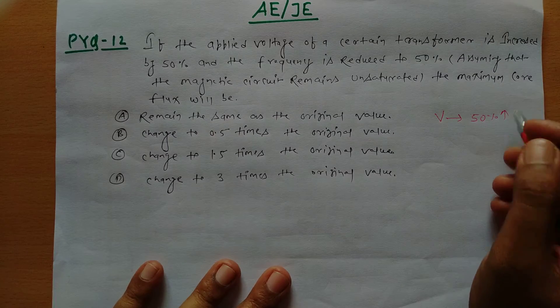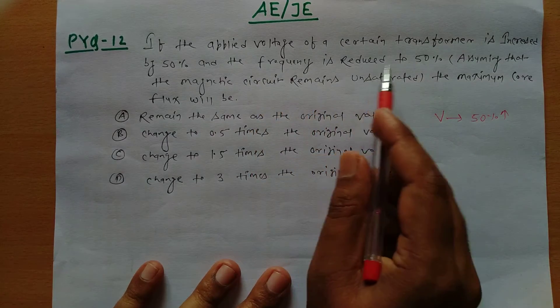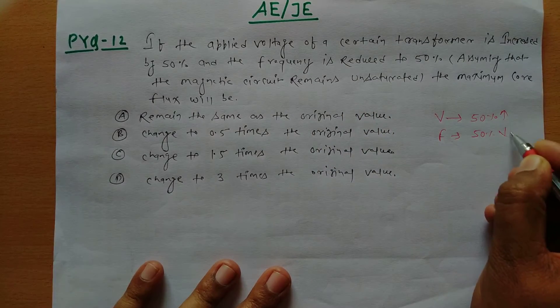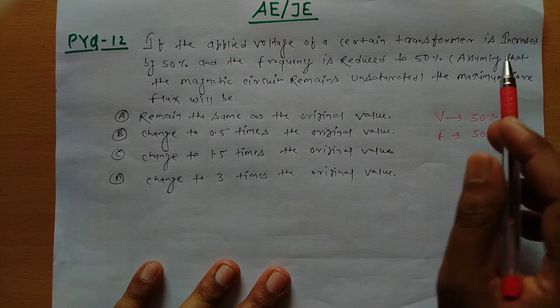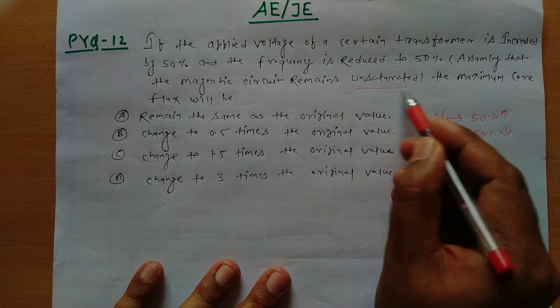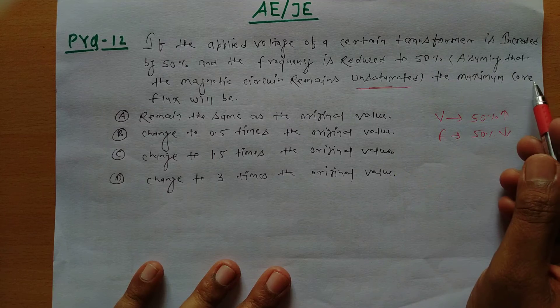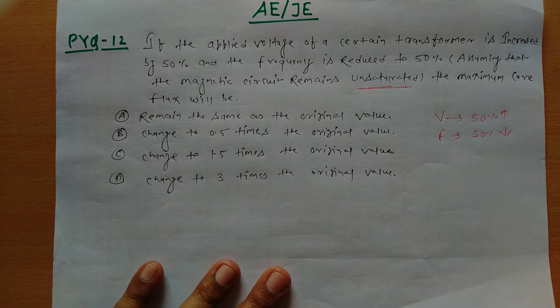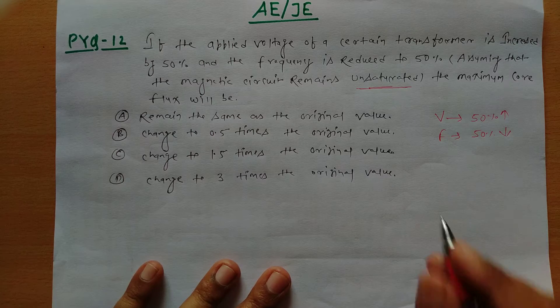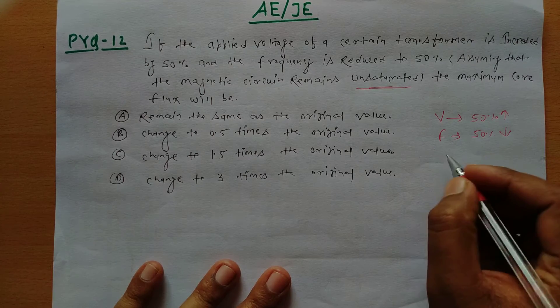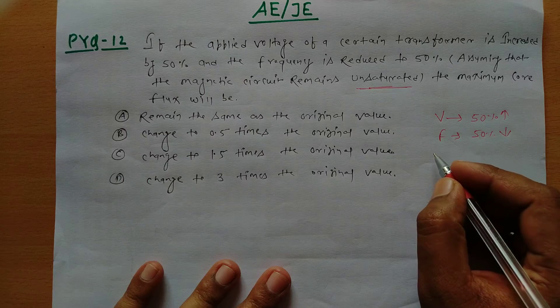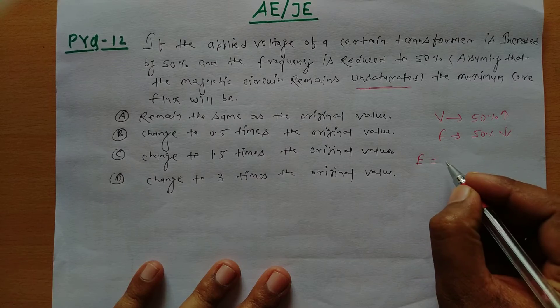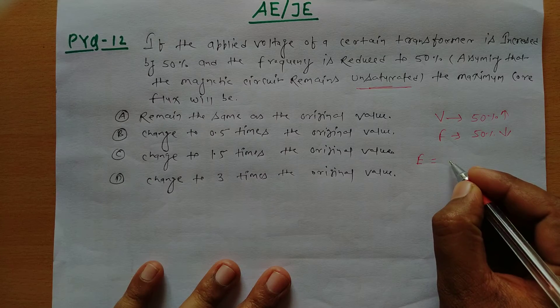And the frequency is reduced to 50 percent, assuming that the magnetic circuit remains unsaturated, the maximum core flux will be. So basically, maximum core flux ka relation we need to derive here. So if we look at the transformer's EMF equation, if we see with respect to that, what do we know?